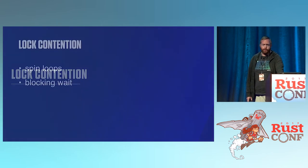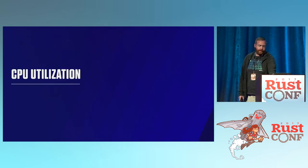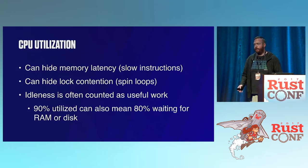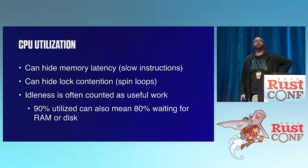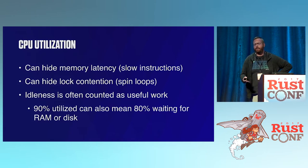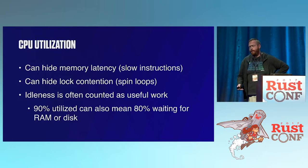Then we have lock contention — things like spin loops and blocking waits — which can cause performance problems. I want to talk about CPU utilization last because it generally hides a lot of performance issues. CPU utilization can hide memory latency and lock contention. Idleness is often counted as useful work: you look at top or htop and see you're using 90% of your CPU, but that can mean you're spending 80% of your time waiting for RAM or disk.